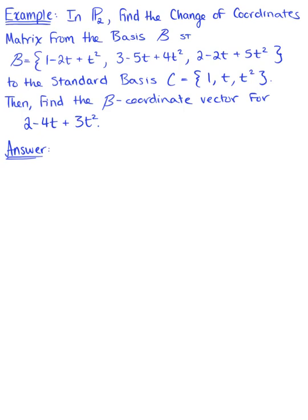In the set of all polynomials P sub 2, find the change of coordinates matrix from basis B to the standard basis C. Then find the basis B coordinate vector for the polynomial 2 minus 4t plus 3t squared.